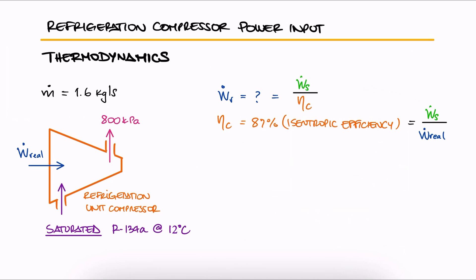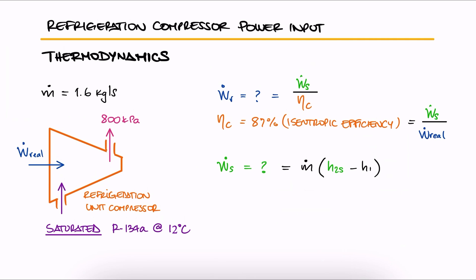This means that we first need to calculate the work input for the isentropic case W dot S. We know that that work is equal to the mass flow rate times the difference in specific enthalpy H2S minus H1. The mass flow rate we have, which means we have to find H1 and H2S.